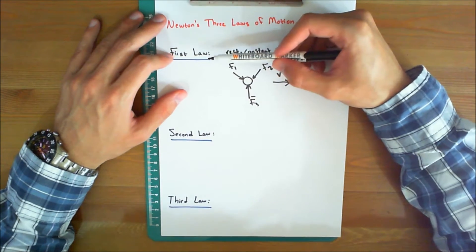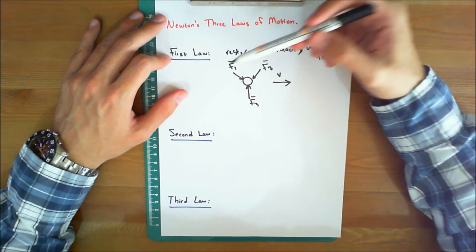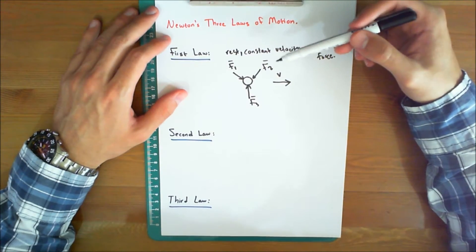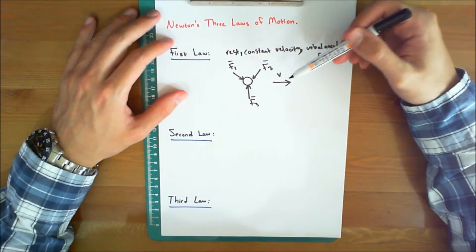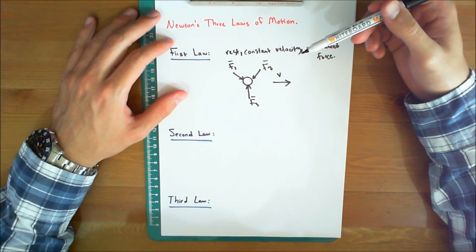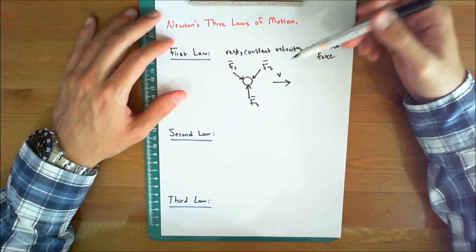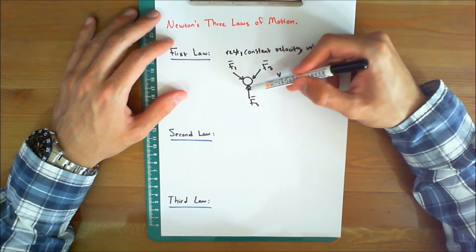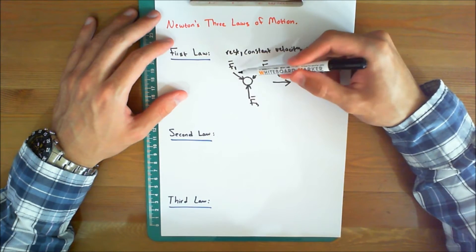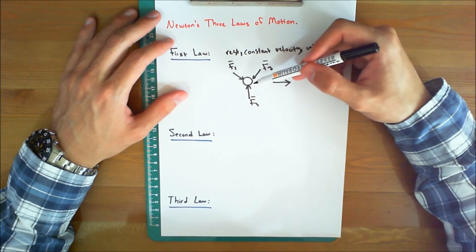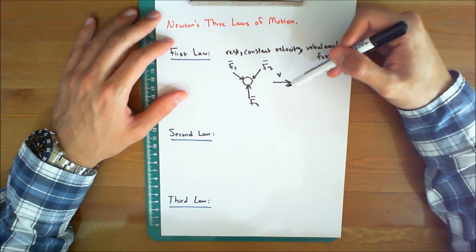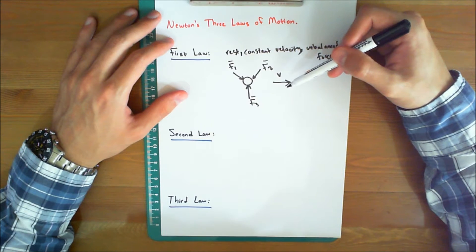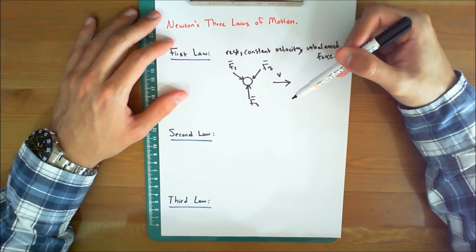Let's get started with the first law. The first law states that a particle originally at rest or moving in a straight line with constant velocity will remain in the state, provided that the particle is not subjected to an unbalanced force. So if you have a particle that is subjected to a variety of loads but is at equilibrium, which means it is at rest, or moves at a constant velocity, will remain in this state.